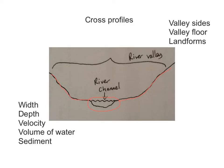The things that will change as the river goes from the source down to the mouth include the width of the river, the depth, the velocity or how fast the river is flowing, the volume of water in the river, and the sediment. These will all change as you go from the source down to the mouth, and you might be able to see some of these in the cross profile.